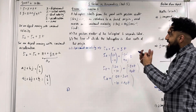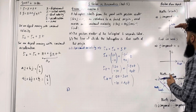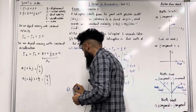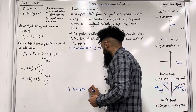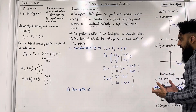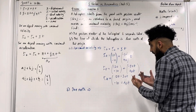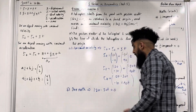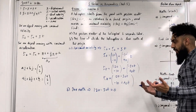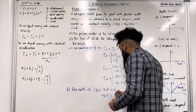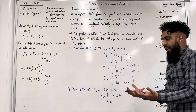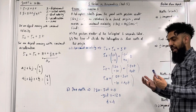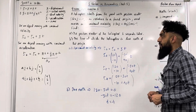For part b), we want the time at which the helicopter is due north of the origin. Due north means the i-component of the position vector must equal zero. The i-component is 120 − 30T, so we set 120 − 30T = 0, giving −30T = −120, hence T = 4 seconds. At T = 4 seconds, the helicopter is due north of the origin.